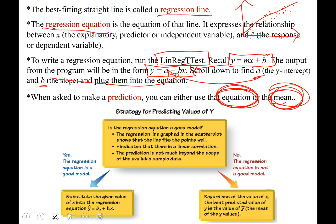This flowchart is called strategy for predicting values of y. The first question you'll ask yourself is, is my regression equation a good model? If you find there is a correlation between your two variables, if the lowercase r was strong enough for you to say there's a correlation, then your answer is yes and you'll use that regression equation to make predictions.